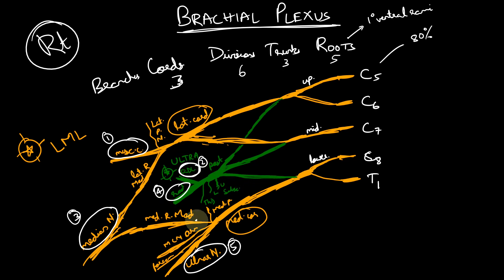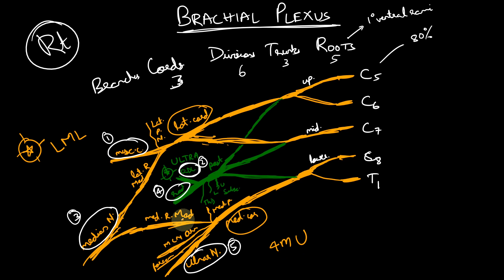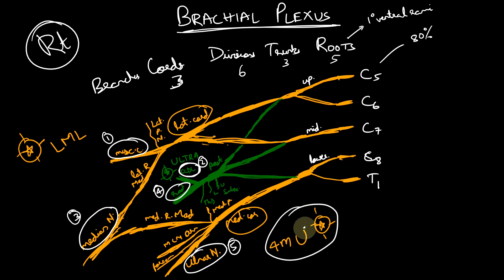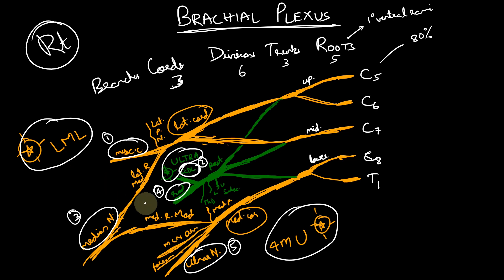The medial cord branches can be remembered with the mnemonic 4MU — because there are four M's and one U. The four M's are: Medial pectoral nerve, Medial root of median nerve, Medial cutaneous nerve of arm, and Medial cutaneous nerve of forearm. The U stands for Ulnar nerve. To summarize all three mnemonics: 4MU for the medial cord, ULTRA for the posterior cord, and LML for the lateral cord.